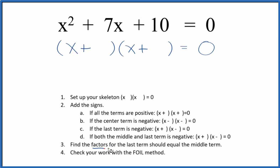Next we need to find all the factors for the last term. That's the 10 here, and they should add up to that middle term, 7. So if you think about 10, 1 times 10 equals 10, but 1 and 10 can't add up to 7.